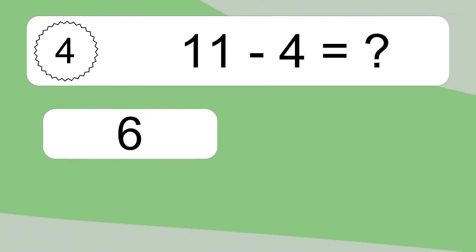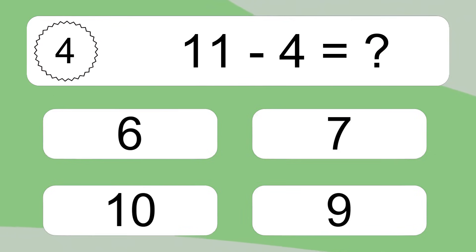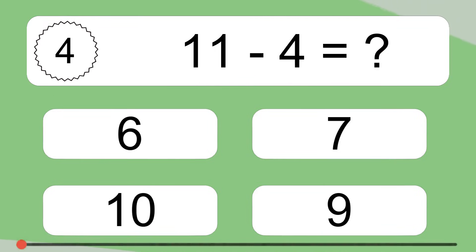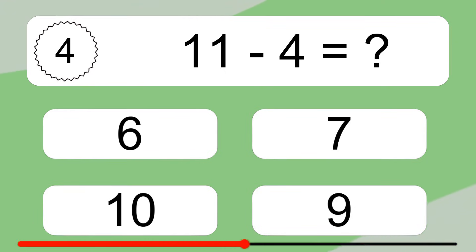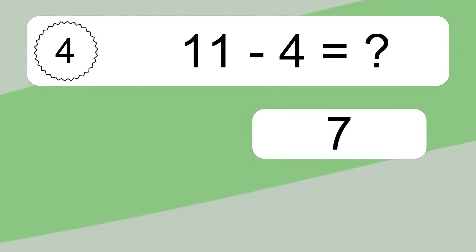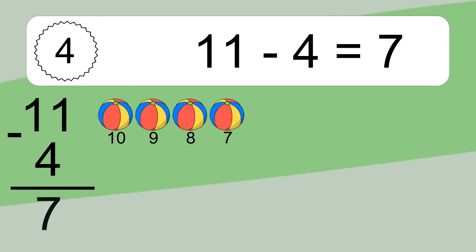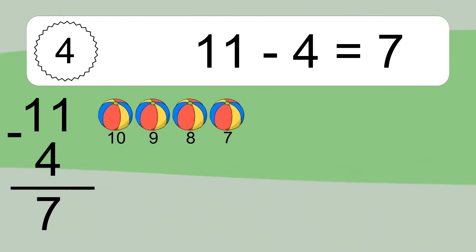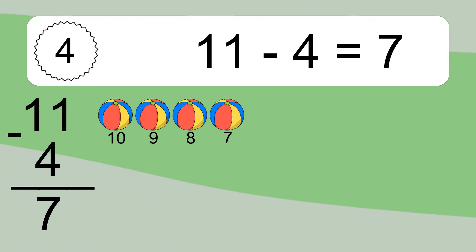11 minus 4 equals what? 11 minus 4 equals 7. Let's count it: 10, 9, 8, 7.